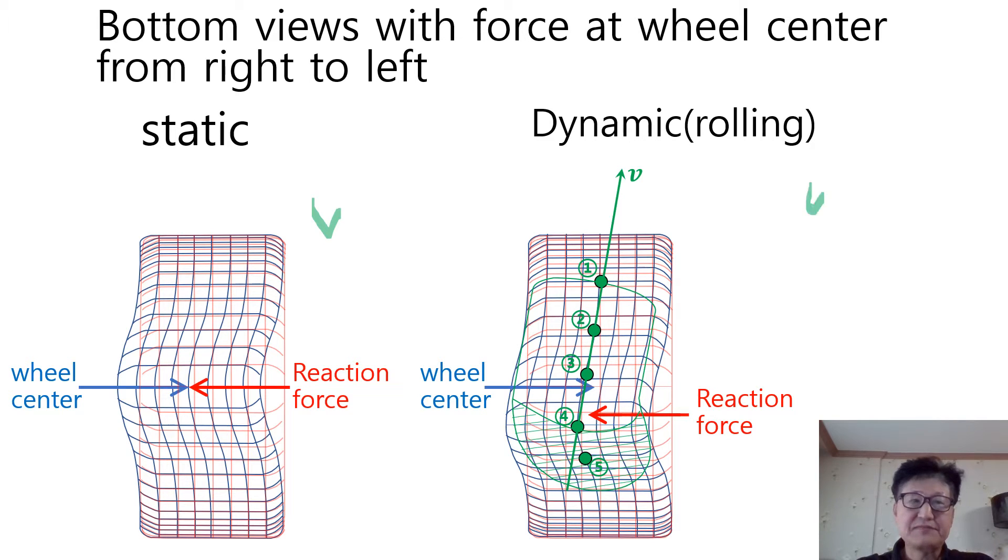The right picture shows the dynamic deformation of the tire with rolling when the wheel center have the lateral force from right to left due to being steered to the right. The area enclosed by green line in the right picture stands for tire contact patch.